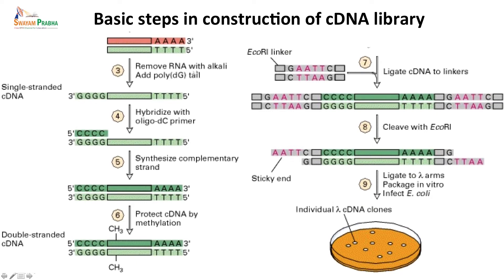The RNA can be removed either with alkali or using an RNA-degrading enzyme, leaving only the first strand of the cDNA. One can then append a poly-dG tail to the three-prime end of this first strand. This can be hybridized to an oligo-dC primer running five-prime to three-prime, which binds to the first strand of DNA. Adding polymerase then synthesizes the complementary second strand of the cDNA.